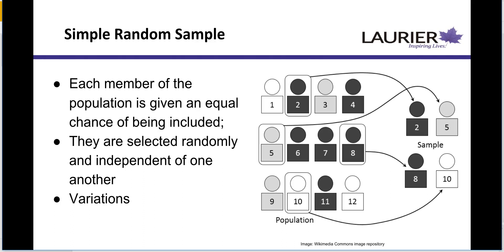There are different types of probability samples. For example, the simple random sample — every member has an equal chance of getting included. In some types of sampling, not everybody has an equal chance; it might be known and non-zero, but not equal. In a simple random sample, everybody has an equal and independent chance of being included. In this graphic, we've got a population from one to twelve lined up regardless of characteristic, and we're just randomly picking people, showing our sample drawn from the population.